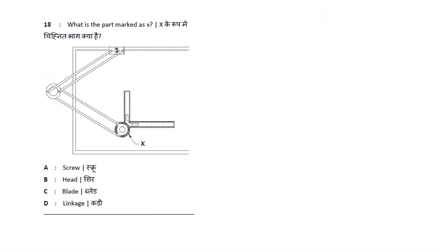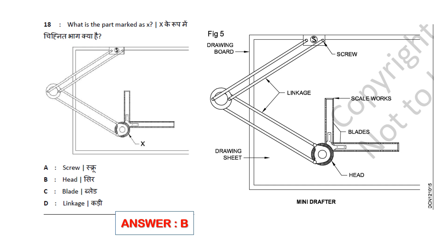First question: What is marked as X? X is marked as a figure — I will show you. This is a mini-drafter figure. This is the head. This is the drawing board.